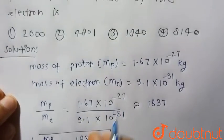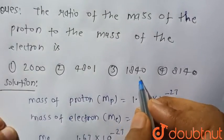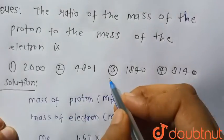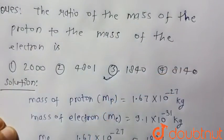In the options, the value which is close to 1837 is 1840. Hence option third, 1840, is the correct choice. Thank you.